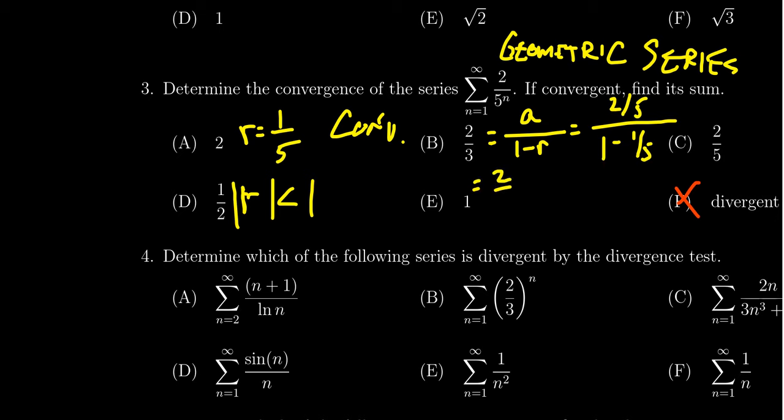We get 2 fifths divided by, well, 1 takeaway 1 fifth is going to be 4 fifths. If you're struggling with that, just multiply by the reciprocal. 2 fifths times 5 over 4. The 5s cancel. 2 goes into 4 two times. And so we should be left with 1 half.